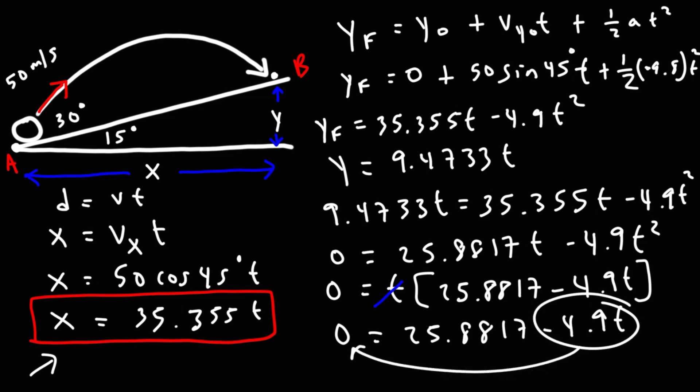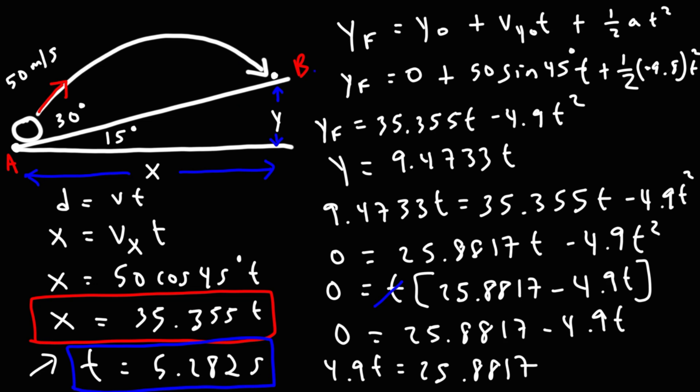So we end up getting 0 is equal to 25.8817 minus 4.9t. And I'm going to take this term, move it to the other side. So it's negative on the right side, but it's going to be positive on the left side. Now, to get t by itself, I need to divide both sides by 4.9. So t is going to be 25.8817 divided by 4.9. So that's going to be 5.282 seconds. So that's going to be the time it takes for the projectile to reach point B.